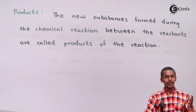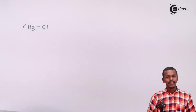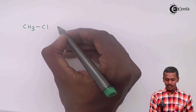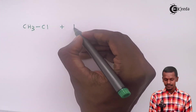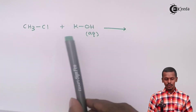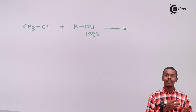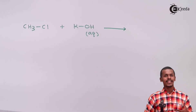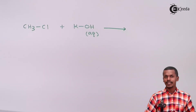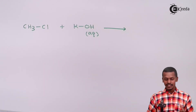Let me give a short analysis of how reactants and products are represented in a chemical reaction. Suppose we have methyl chloride, CH3Cl, and we react it with an aqueous solution of KOH. These two molecules are different and will interact with each other. There could be an exchange of atoms, substitution, or elimination — different kinds of reactions — and this is how a new kind of product is formed.